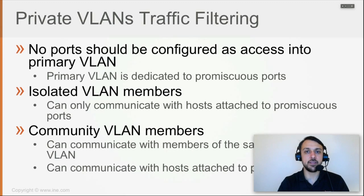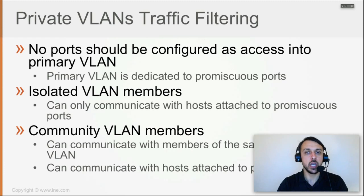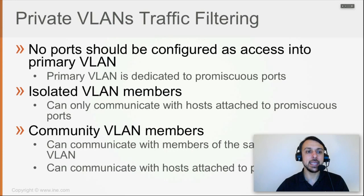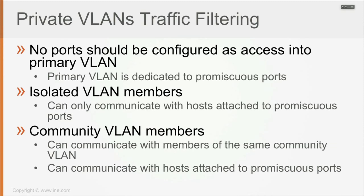Isolated ports — if I have 10 ports as isolated — they cannot communicate between each other. It's like private VLAN edge, but they are going to be able to communicate with the promiscuous port where I want to have the default gateway, so those endpoints can send traffic out of the VLAN. Community ports — whoever is a member can speak between themselves and also with the promiscuous ports to send traffic out. It's much more complex than private VLAN edge, but it gives you much more control over who can speak with whom at L2, and this configuration spans across switches.